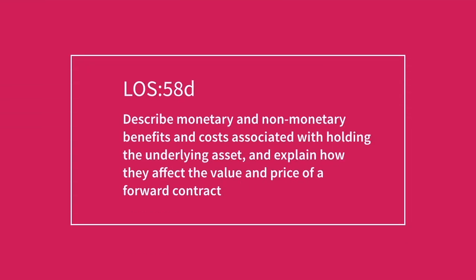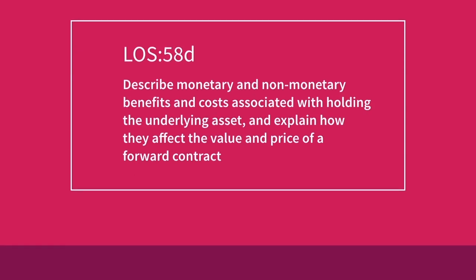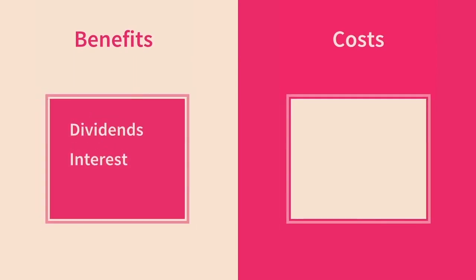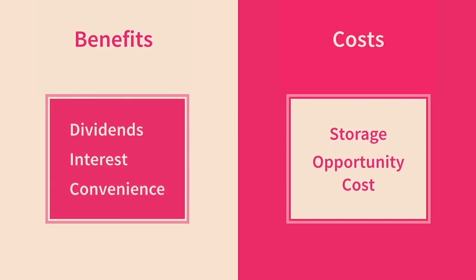Describe monetary and non-monetary benefits and costs associated with holding the underlying asset and explain how they affect the value and price of a forward contract. In this section, we are going to quickly deal with some of the benefits and costs of holding assets and how these factors are accounted for in the pricing of a forward contract. When we consider that the price of a forward contract must completely reflect the risk of the underlying without actually being physically connected to it, these benefits and costs must be accounted for.